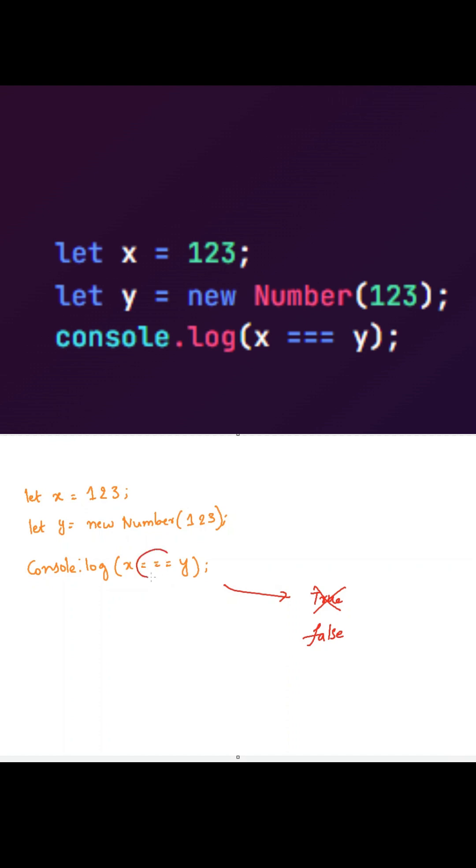Here we are using the strict equality operator between x and y. What this strict equality operator will do is check both the values as well as the data types.